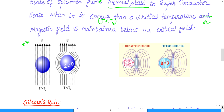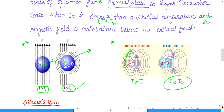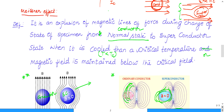Looking at the diagram: when temperature is maintained above critical temperature, it acts like a conductor and all lines of force pass through it. When temperature is maintained below the critical temperature, the conductor becomes a superconductor and it repels the magnetic lines of force. For an ordinary conductor the lines of force are normal, but when it becomes a superconductor — with temperature below Tc — the magnetic lines of force explode outward and go away.